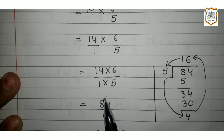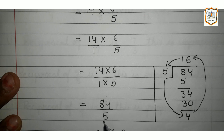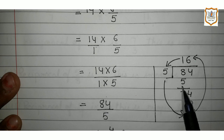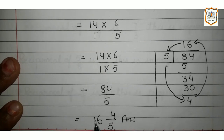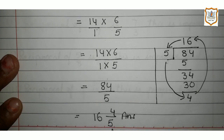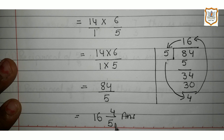14 sixes are 84 and 1 fives are 5. Now, this is an improper fraction. We will convert this improper fraction into a mixed fraction. For that, we will divide 84 by 5 and our mixed fraction is 16 and 4 upon 5. This is the answer of part 2 of question number 1, exercise 2.4.